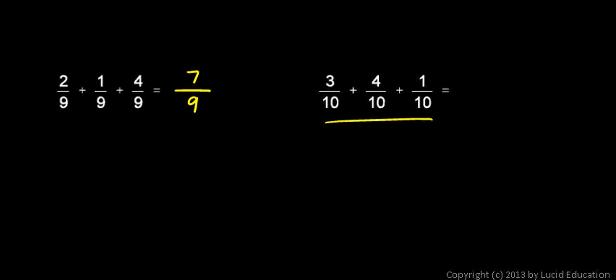In the second example, I have 10ths. How many 10ths? Well, 3 of them, and also 4 of them, and also 1 of them. The 3 represents 3 10ths, the 4 represents 4 10ths, and the 1 represents 1 10th. So they are all 10ths. So I can just add them up. 3 plus 4 is 7 plus 1 is 8. So 3 10ths plus 4 10ths plus 1 10th is 8 10ths.